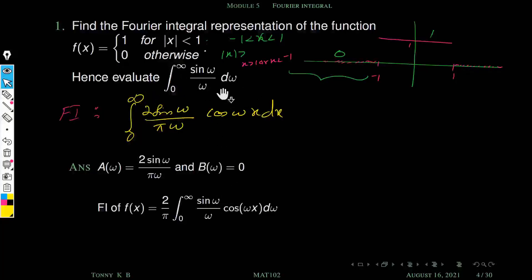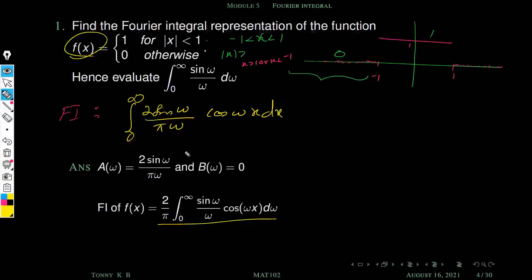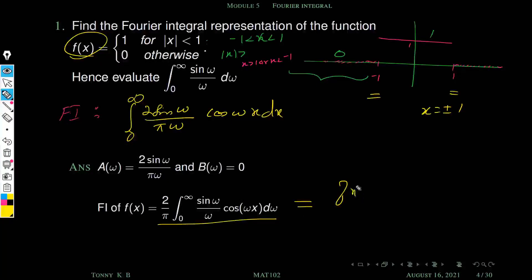Next we use the relation between the Fourier integral representation and the given f(x). If the function is continuous they are equal; otherwise it equals the average of the left and right limits. This function is continuous everywhere except at x = ±1. So at x = ±1 it is discontinuous, otherwise it is continuous.